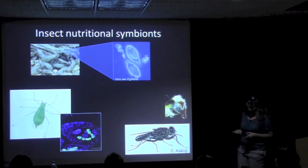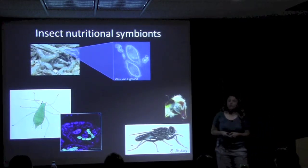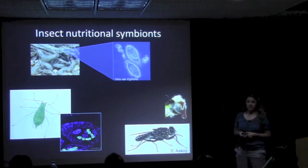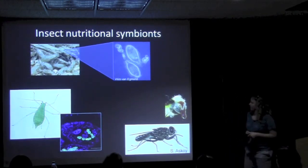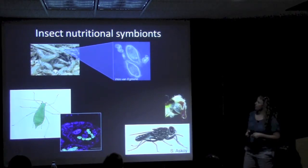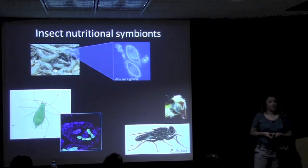Or we have the pea aphid, and in this somewhat obscure picture the fluorescent green organ is the bacterium which houses Buchnera, an obligate symbiont for the pea aphid that assists with amino acids deficient in the phloem diet. Likewise, blood feeders such as the tsetse fly also have a bacterium which helps with provision of things lacking from a blood diet, such as B vitamins.